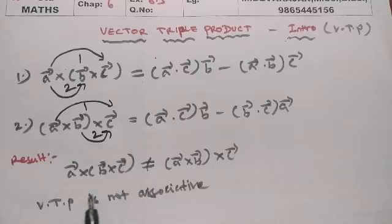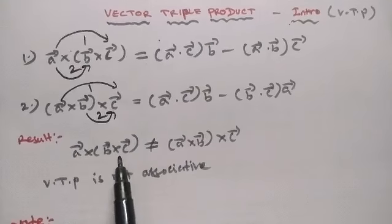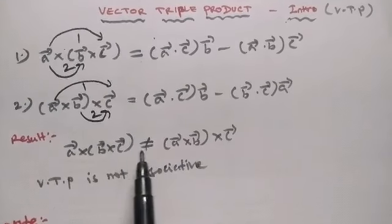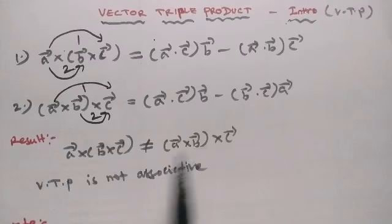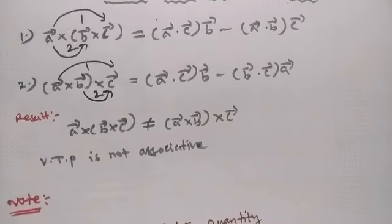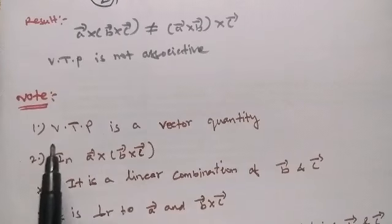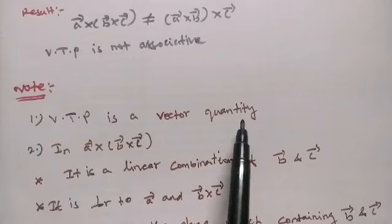So the result is A cross B cross C dot R. VTP is not associative. Vector triple product is not associative. Vector triple product is a vector quantity.